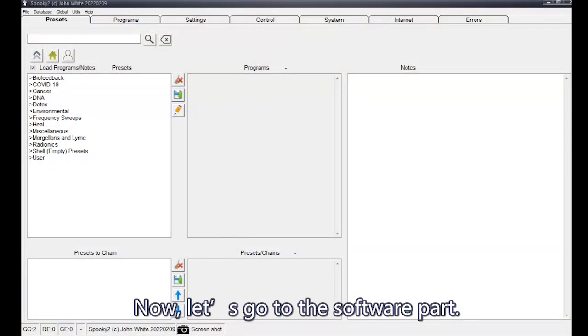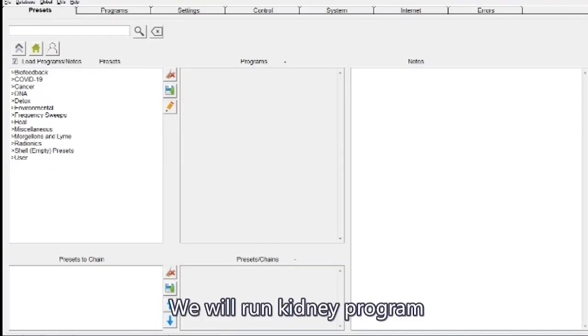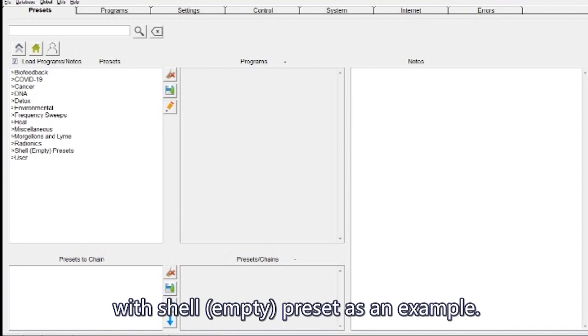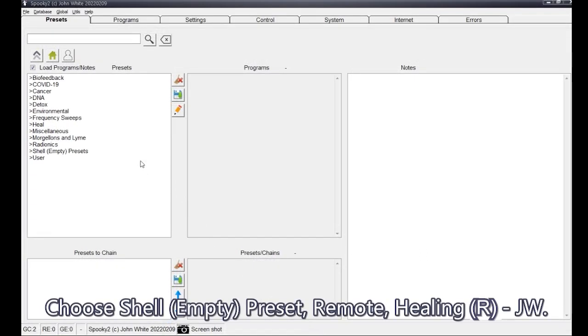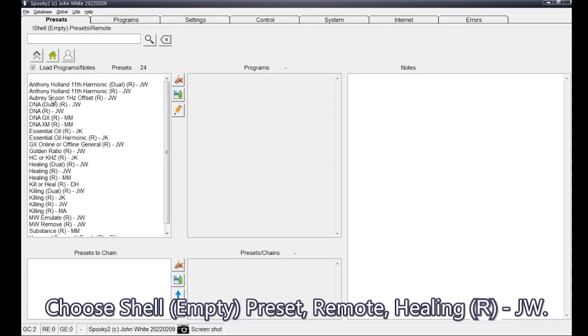Now, let's go to the software part. We will run Kidney Program with Shell Empty Preset as an example. Choose Shell, Empty, Preset, Remote, Healing, JW.